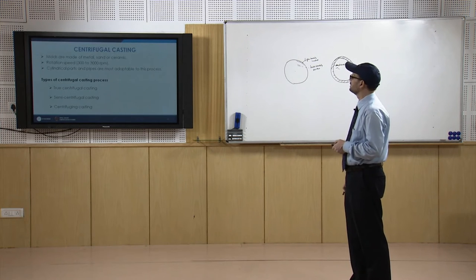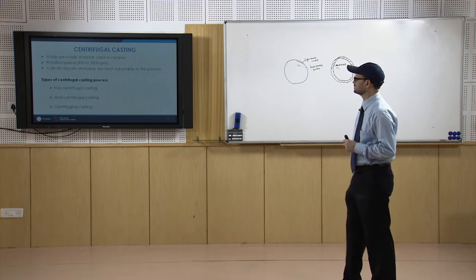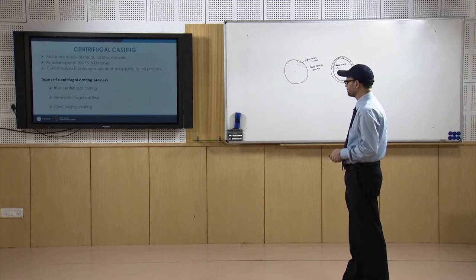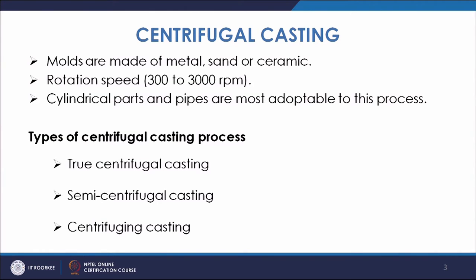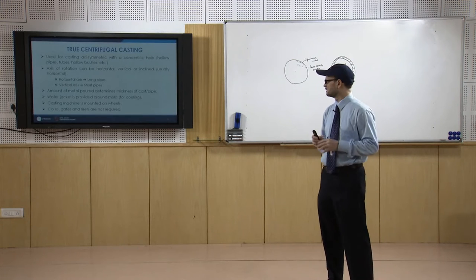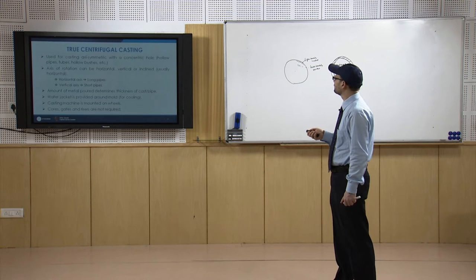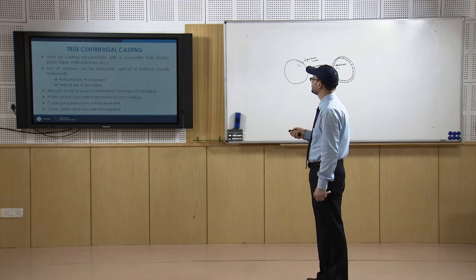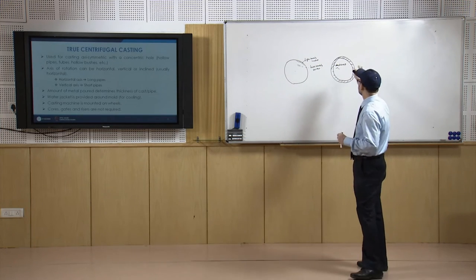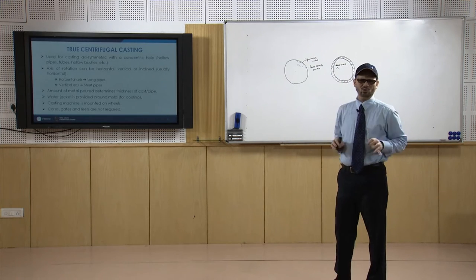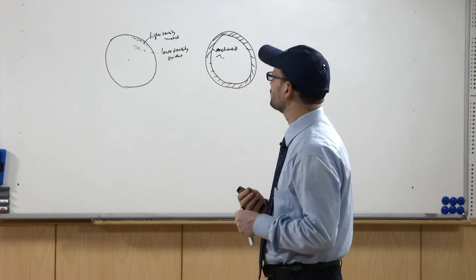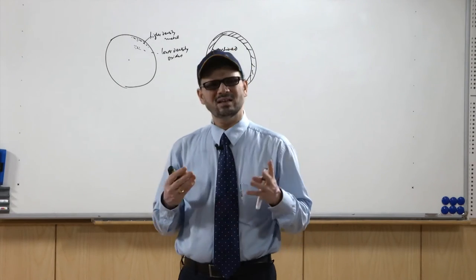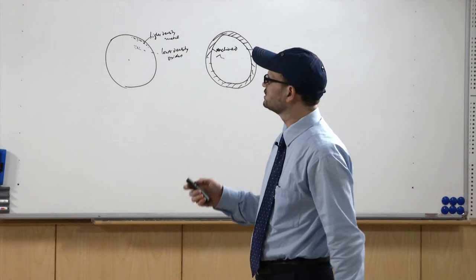The different varieties of centrifugal casting are: true centrifugal casting, semi-centrifugal casting, and centrifuging. True centrifugal casting is used for casting axisymmetric types of castings with a concentric hole — hollow pipes, tubes, or hollow bushes. You need to make an axisymmetric product with a concentric hole like a pipe having certain inner and outer diameters. These kinds of products — pipes, tubes, hollow bushes — are cast using true centrifugal casting.